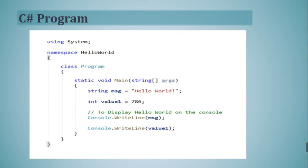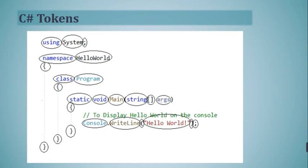To further clarify the concepts of tokens and their various types, let's start from our first C# program. This program displays two strings on the console: 'Hello World' and a second value. We are revisiting this program because we want to further clarify the concept of tokens. On this slide, all the tokens and program elements in the C# program are encircled, showing that a program consists of tokens.